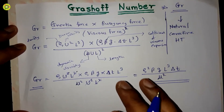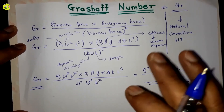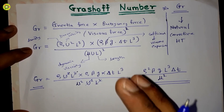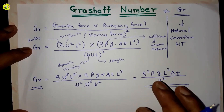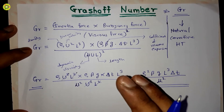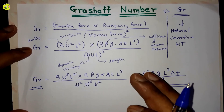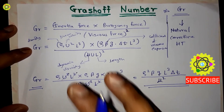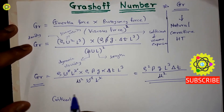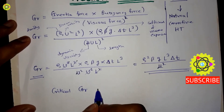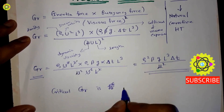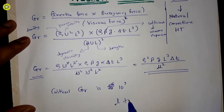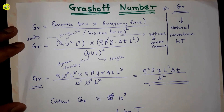Remember that the Grashof number plays a role in free convection similar to that played by the Reynolds number in forced convection. The Reynolds number is explained in a previous video linked in the description. Also, the critical Grashof number is 10⁹ for flow over a vertical plate, marking the change from laminar to turbulent flow.